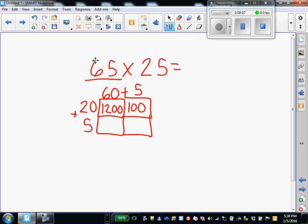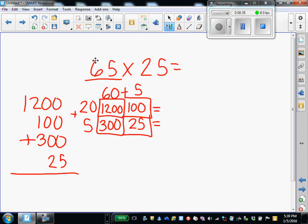Moving down to the 5. 5 times 60 is 300. 5 times 5 is 25. So next step is to add our products together. And you can line up the place values. 1,200 plus 100 is 1,300. 300 plus 25 is 325. I can add those together quickly. I get 1,625.